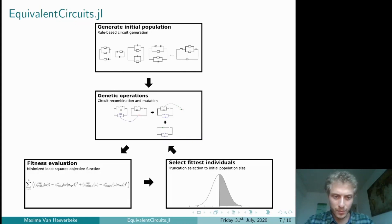The next step is to evaluate the fitness of this extended population. This is done using the minimized least-squared objective function between the experimental values of the impedance and the simulated impedance values of the circuits where the parameters have been optimized using a gradient-based optimization subroutine.